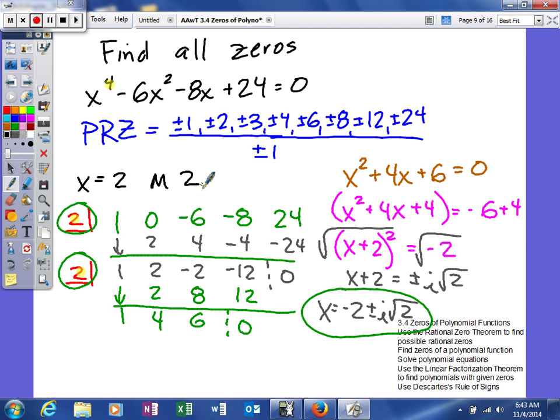So one thing you do need to remember is that irrational numbers and imaginary zeros, just like we found right here, it will actually come in pairs. So remember, you can't have an odd number of imaginary zeros or irrational zeros. So we're going to look at one more and then we'll let you try some on your own.